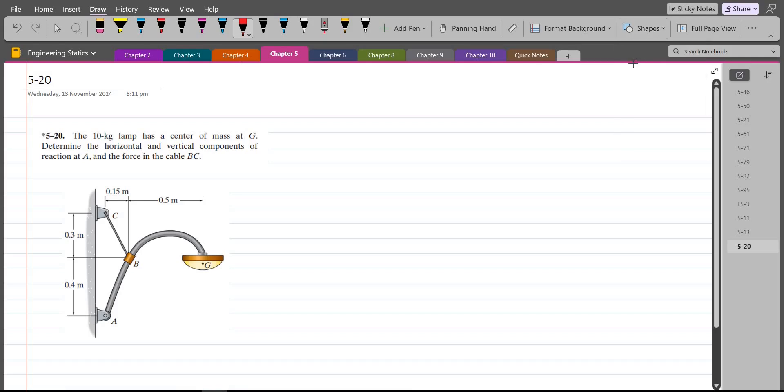So at point G, I have the weight of the lamp which is acting in a vertically downward direction. I have a force due to the cable BC. The point A is pin supported, so I have two support reactions, one horizontal support reaction and one vertical support reaction.